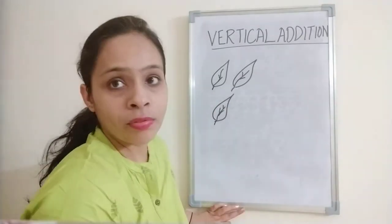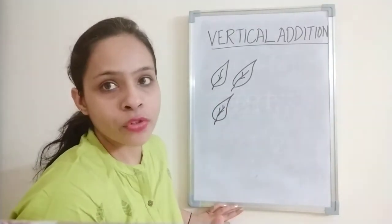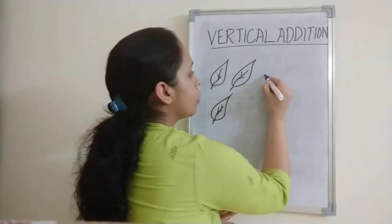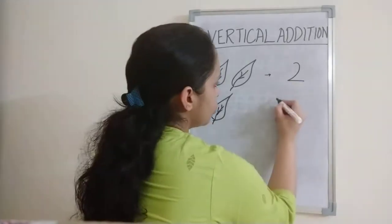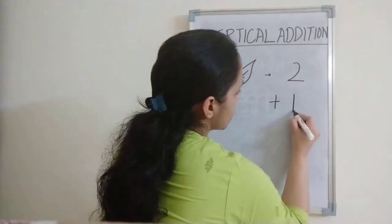In the above line, how many leaves have I drawn? I have drawn two leaves. So what am I writing? Two. What is this sign? Plus sign. And how many leaves have I drawn here? Only one. Two plus one.